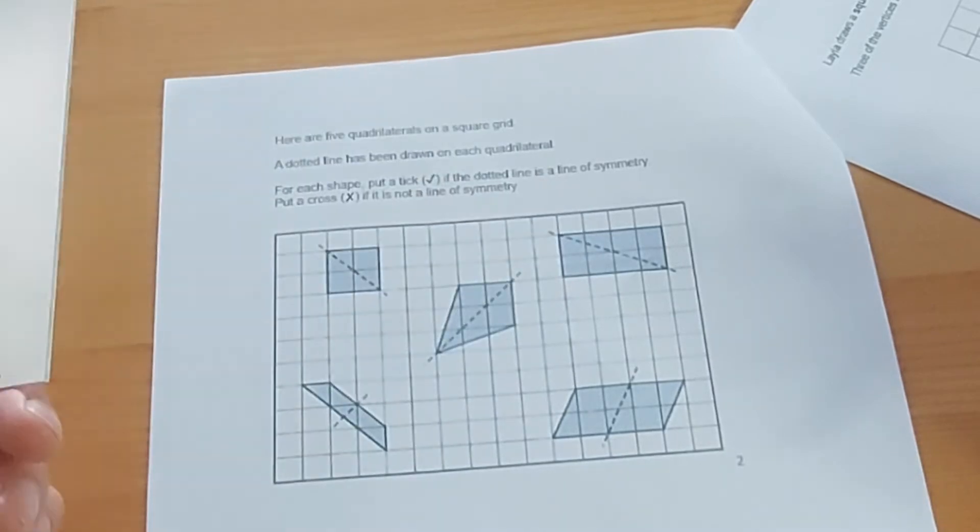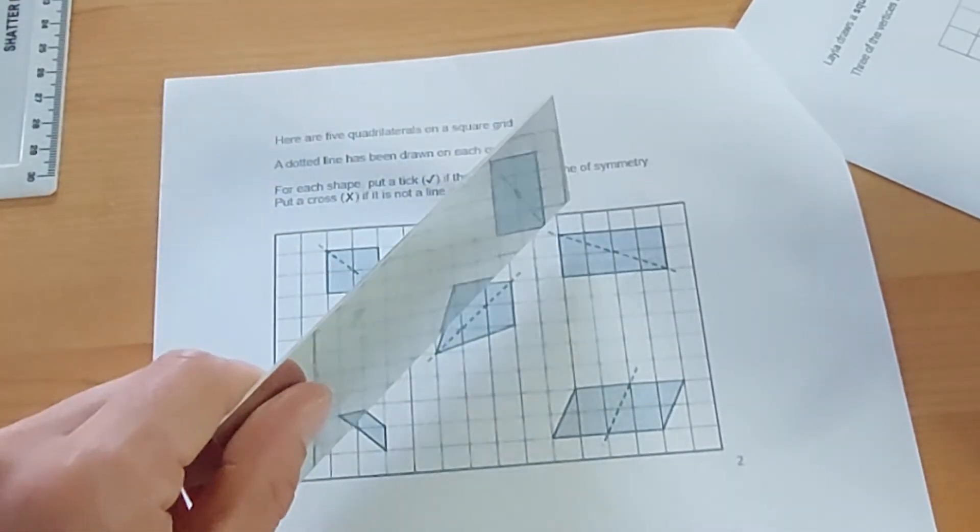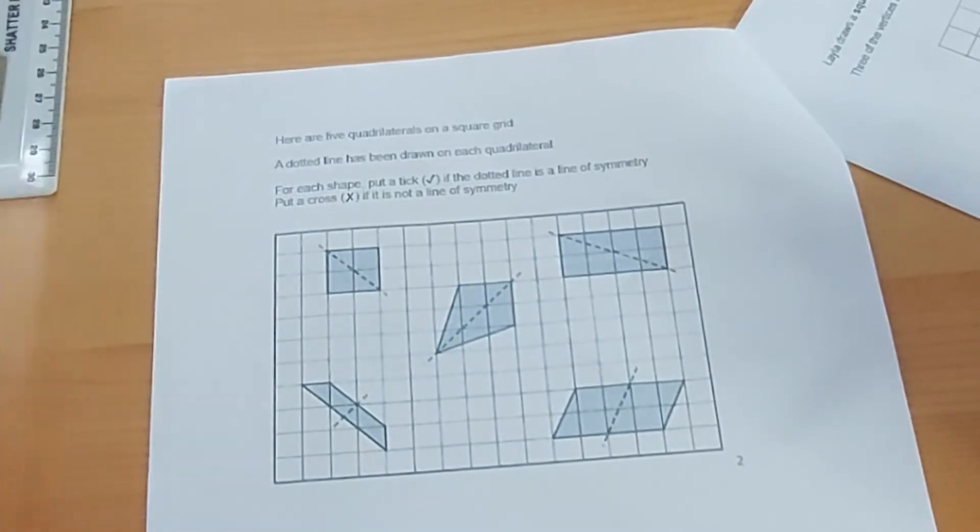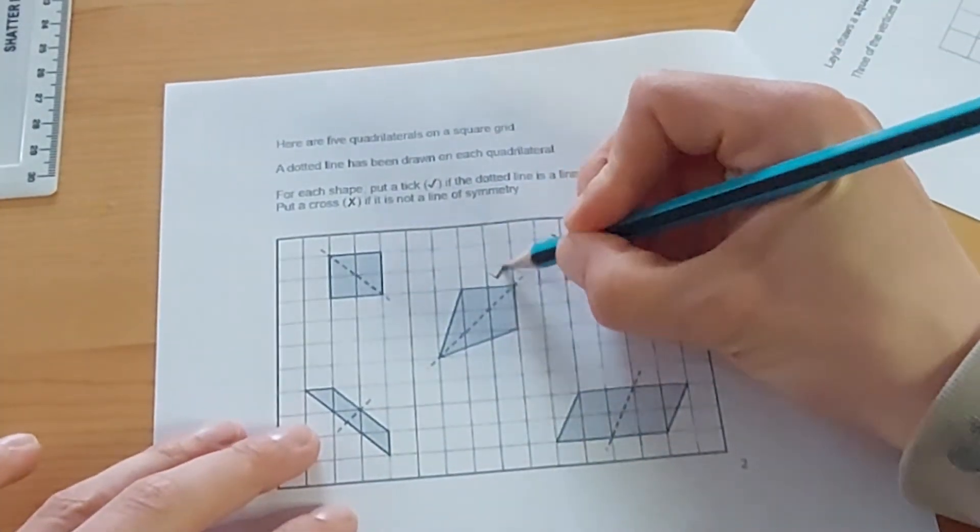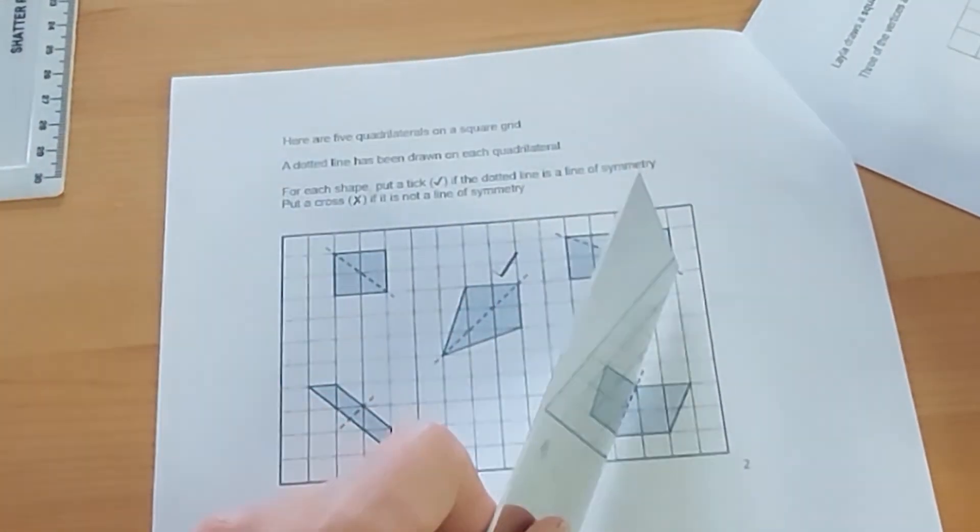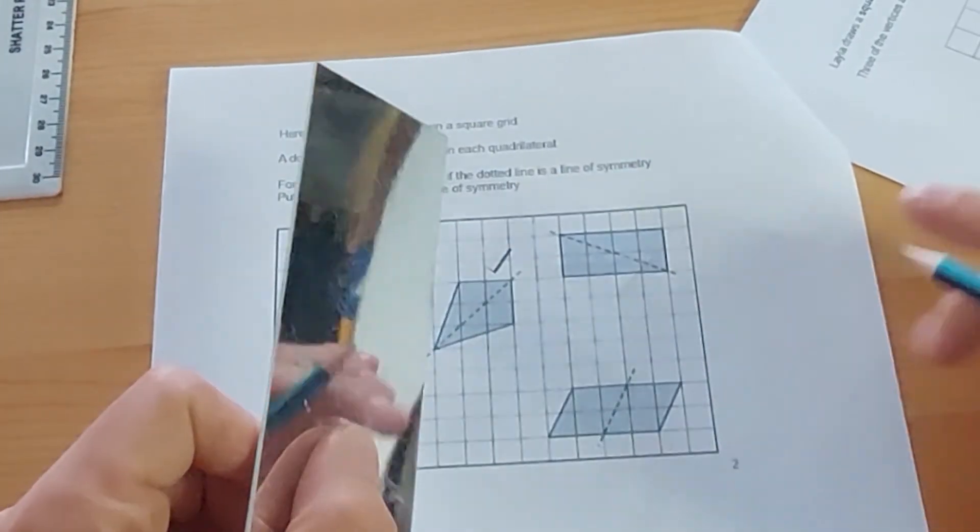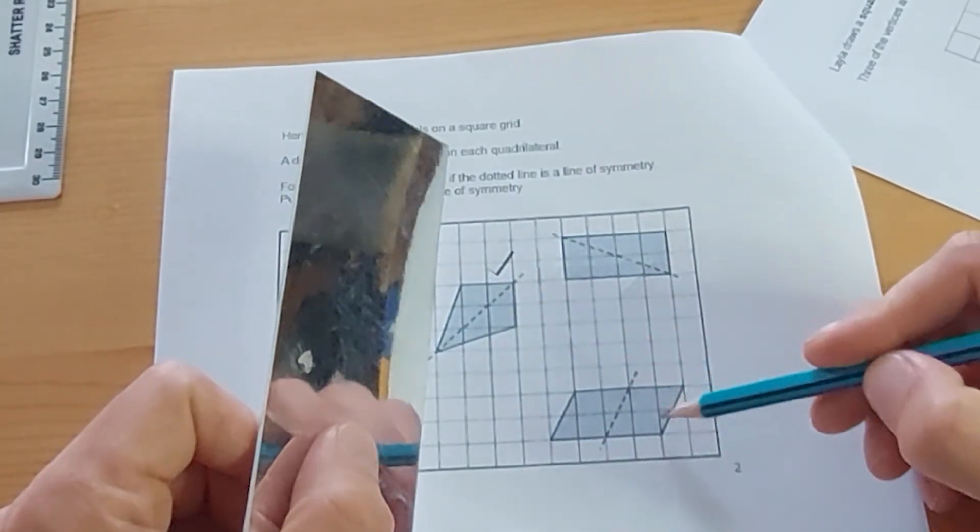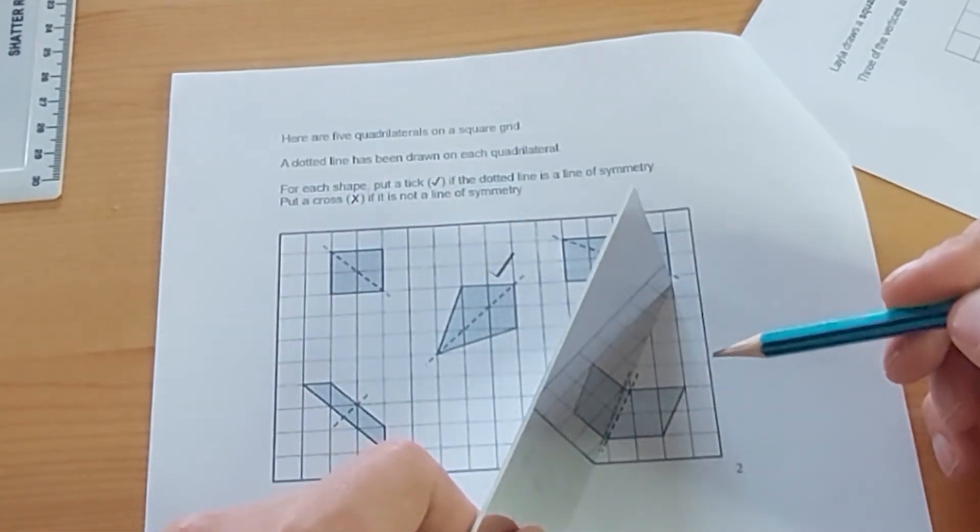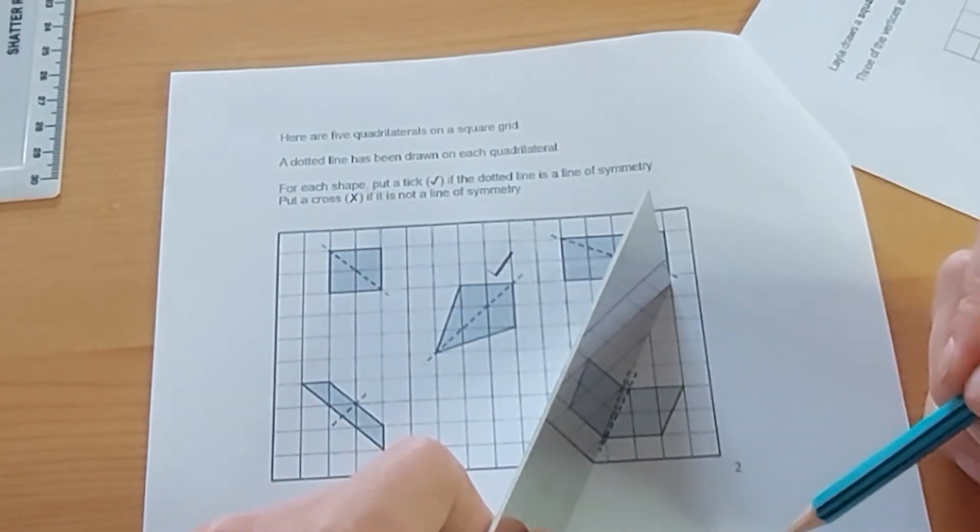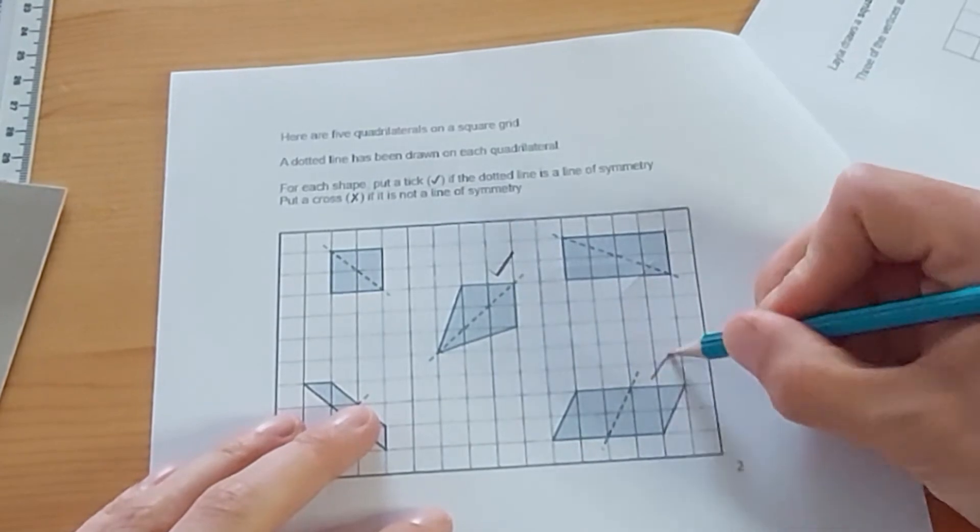Does that look the same both sides? Yes, it does. So I would tick this shape. Does this shape look the same when I held the mirror on that mirror line? No, it does not. That is not the same as that side. We can check again. If it was symmetrical, it should look like this. So that would be a cross on that one.